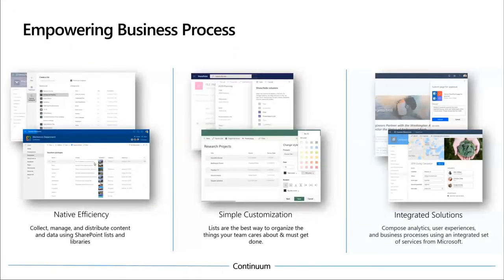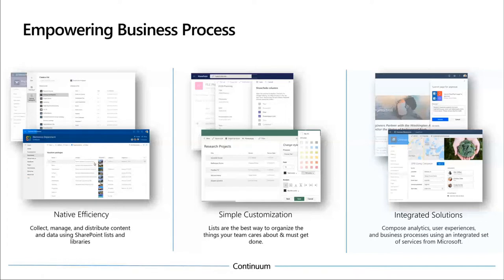We want business process to be available to everybody — not just a specific class of people. There should be a continuum where every user can get what they want from lists. From the product team perspective, this starts with giving users power through native efficiency — easier and quicker ways to input data. We're making changes to the new list creation experience, which also allows creating lists from Excel files or from existing lists, and modernizing Quick Edit.